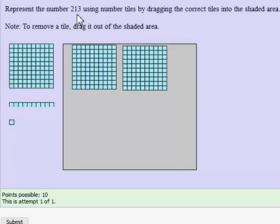I still need 13 more to go, and rather than dragging 13 of these, a more efficient way to do it is to notice that there's a 1 in the tens place, so I would drag 1 rod, which would give me 10 units. Now I have 210 tiles in the shaded area.